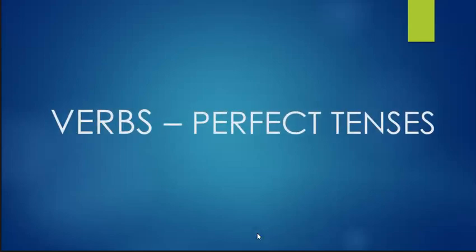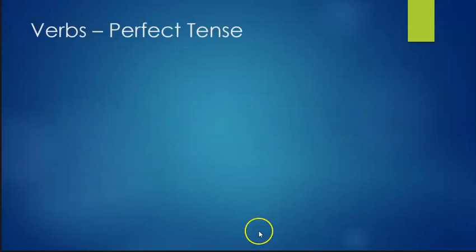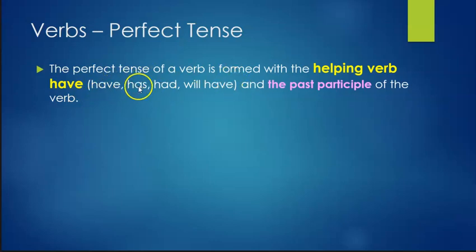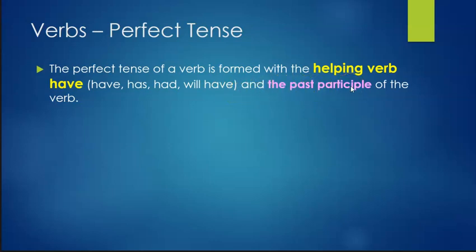This lesson is on the perfect tenses and it is our fifth lesson on verbs. The perfect tense is formed with the helping verb have — some form of have. Have and has are present, had is past, and will have is future — plus the past participle of the verb.